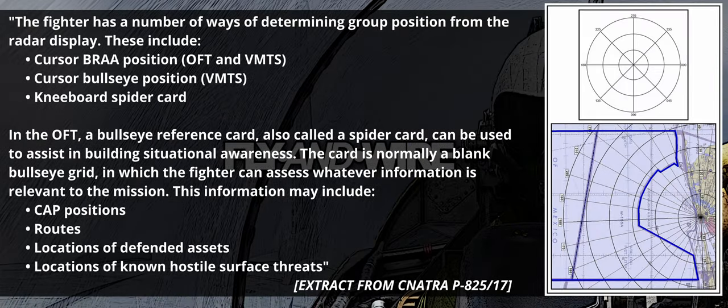As the Phantom 2 gets closer, and after a few discussions with SMEs and friends, I realized I had never made a Spider card that suited my needs — more correctly, I had never felt the need to have one. In the F-14 Tomcat, we bastardized the nav grid to work as a poor man's Bullseye reference, since we do not have the correct Bullseye page or the PTID. Modern aero modules have instead embedded Bullseye support in their avionics.